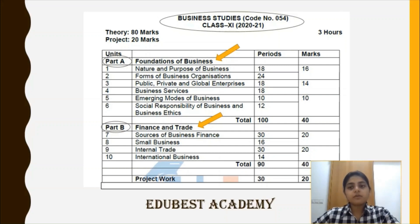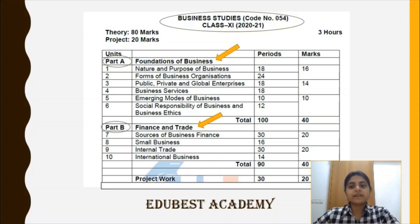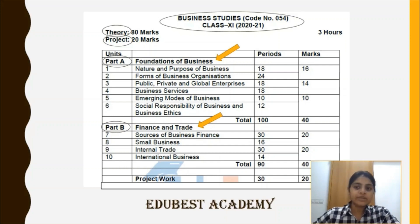Moving forward to the marking criteria, the total of 100 marks includes two sections: theory and project work. Theory will be taken through an exam conducted for 80 marks and the project is of 20 marks. In the 80-mark exam paper, 40-40 marks is dedicated to each part, that is Part A and Part B.